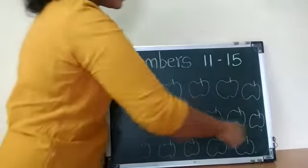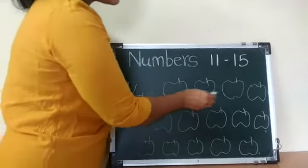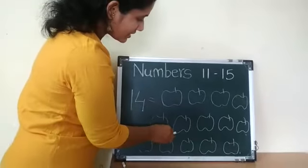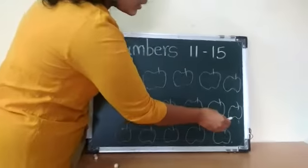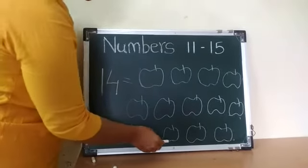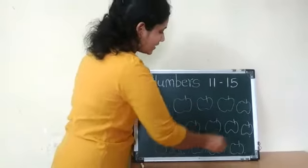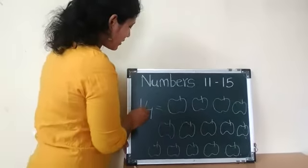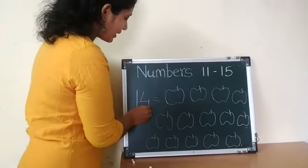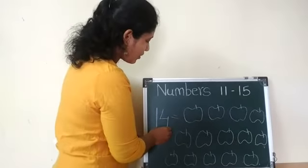14 apples are here. Count again: 1, 2, 3, 4, 5, 6, 7, 8, 9, 10, 11, 12, 13, 14. 14 apples are here. And this is number 14. 1, 4, 14. 1, 4, 14.